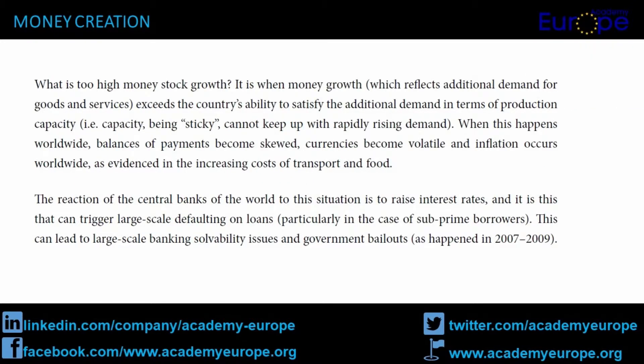What is too high money stock growth? It is when money growth, which reflects additional demand for goods and services, exceeds the country's ability to satisfy the additional demand in terms of production capacity — i.e. capacity being sticky cannot keep up with rapidly rising demand. When this happens worldwide, balances of payments become skewed, currencies become volatile and inflation occurs worldwide, as evidenced in the increasing costs of transport and food. The reaction of the central banks of the world is to raise interest rates, and it is this that can trigger large-scale defaulting on loans, particularly in the case of subprime borrowers. This can lead to large-scale banking solvability issues and government bailouts, as happened in 2007–2009.